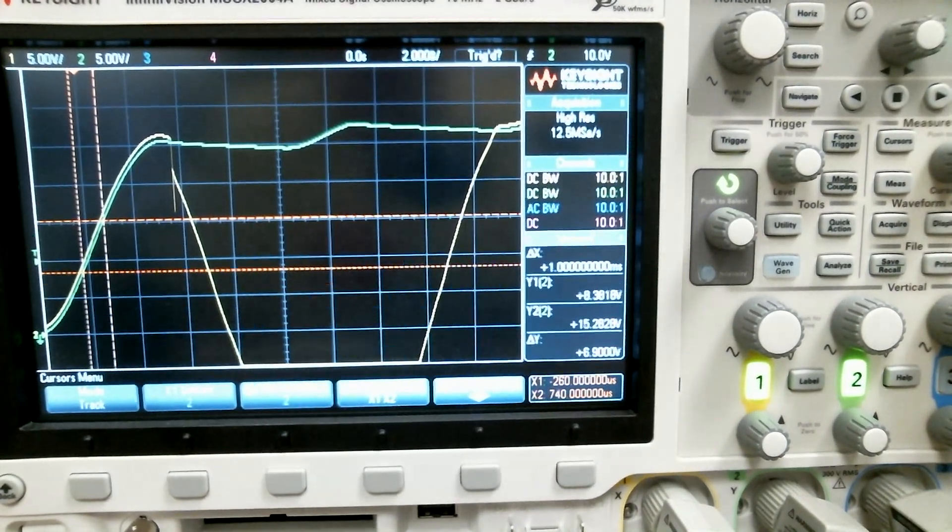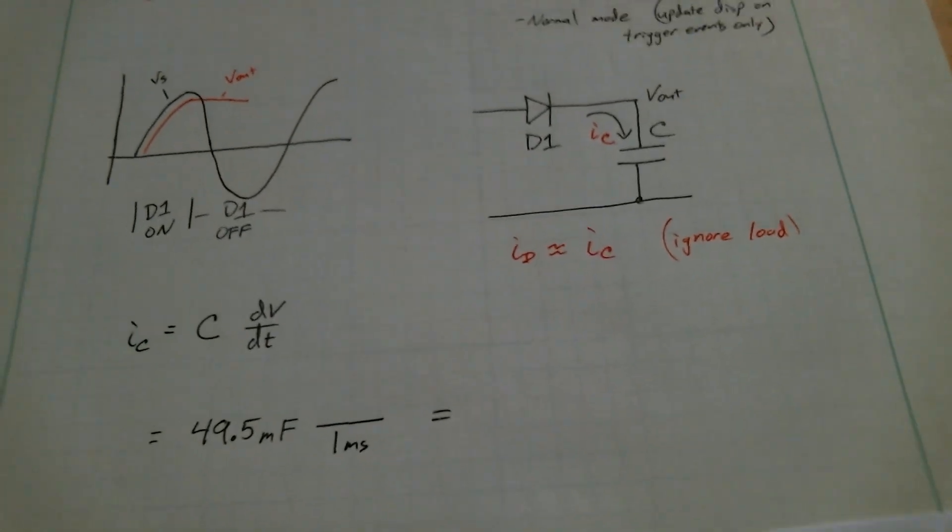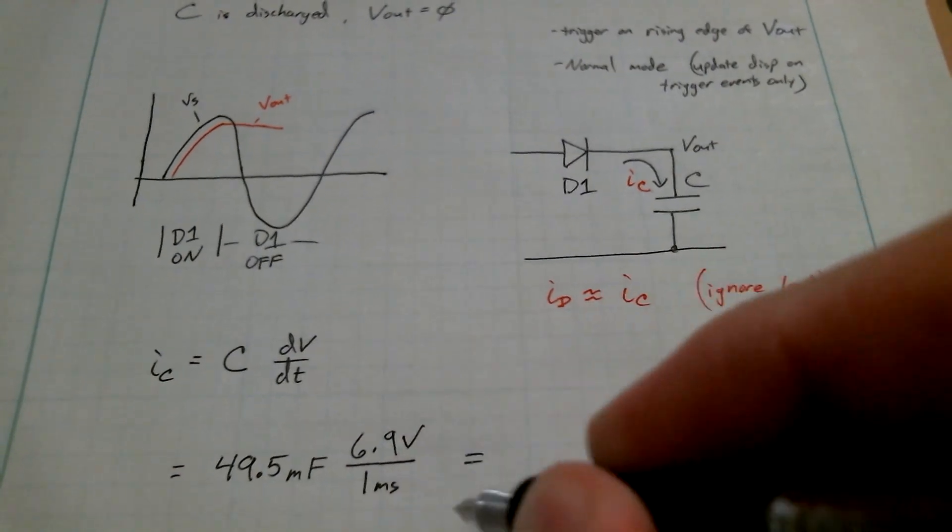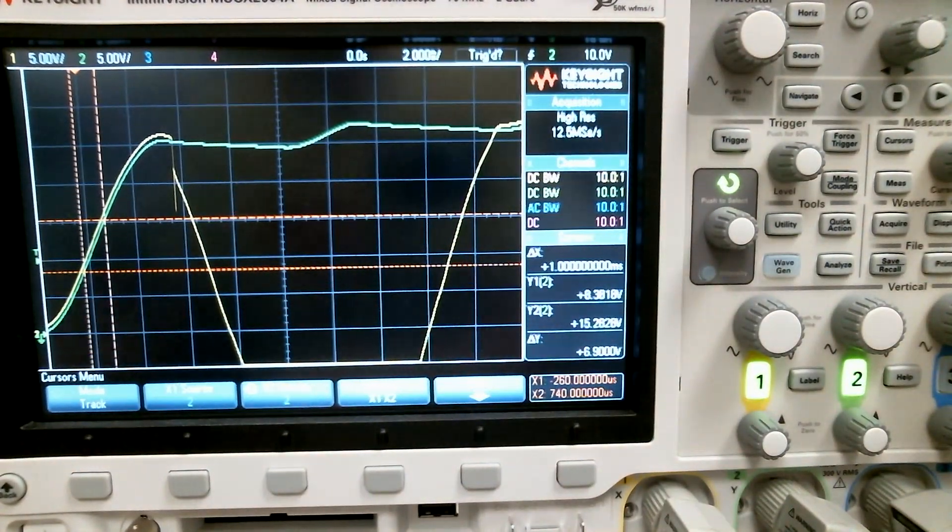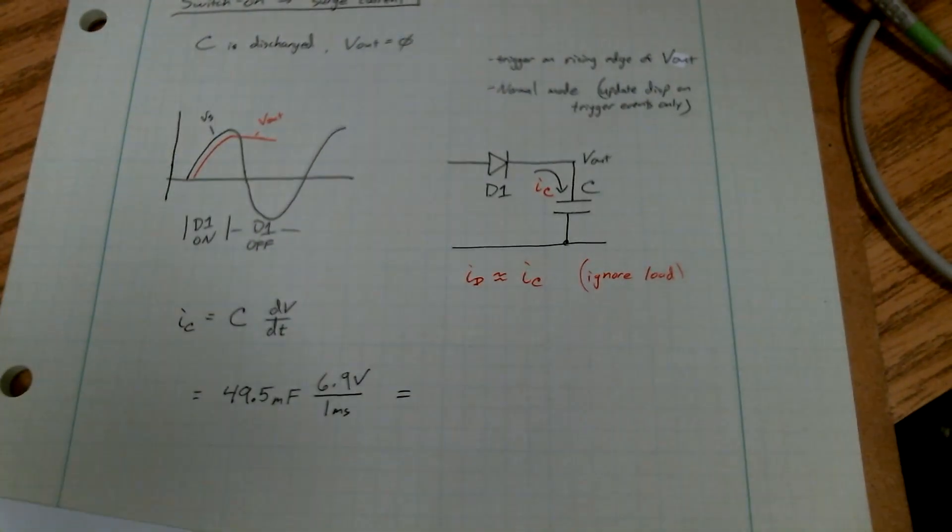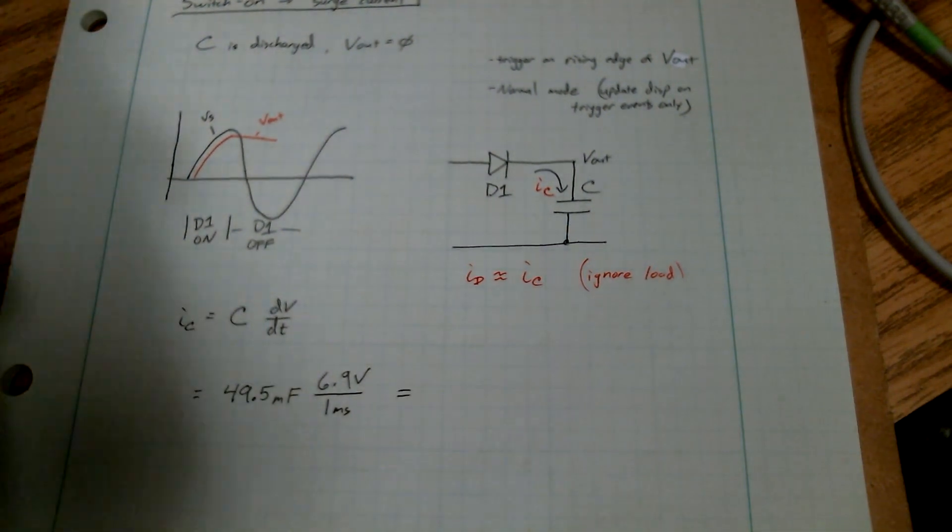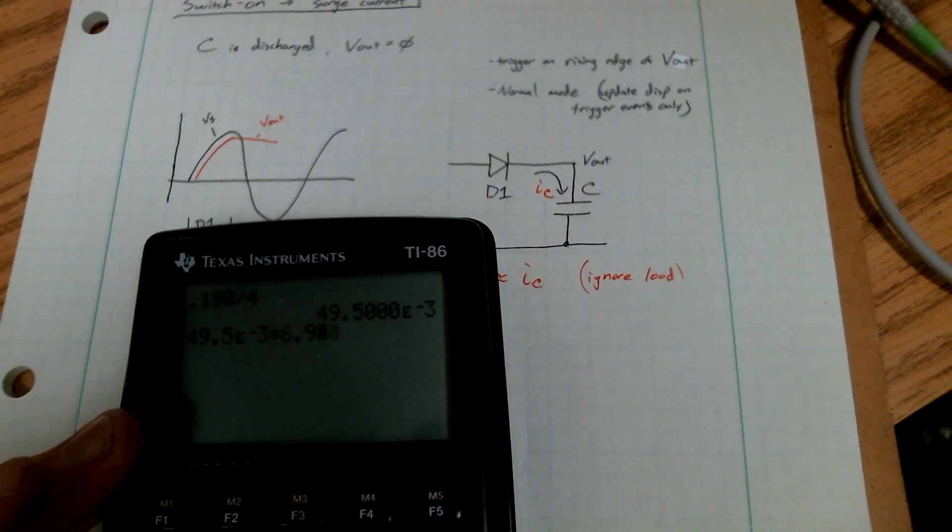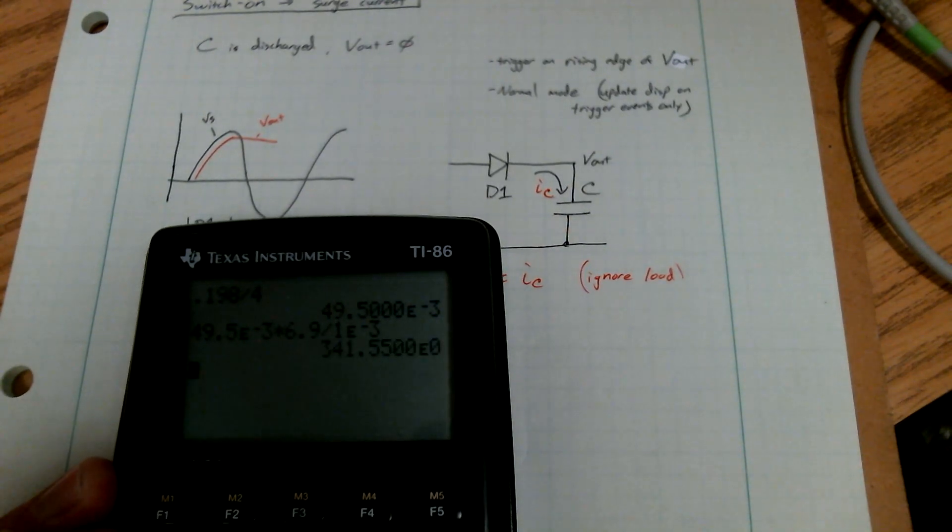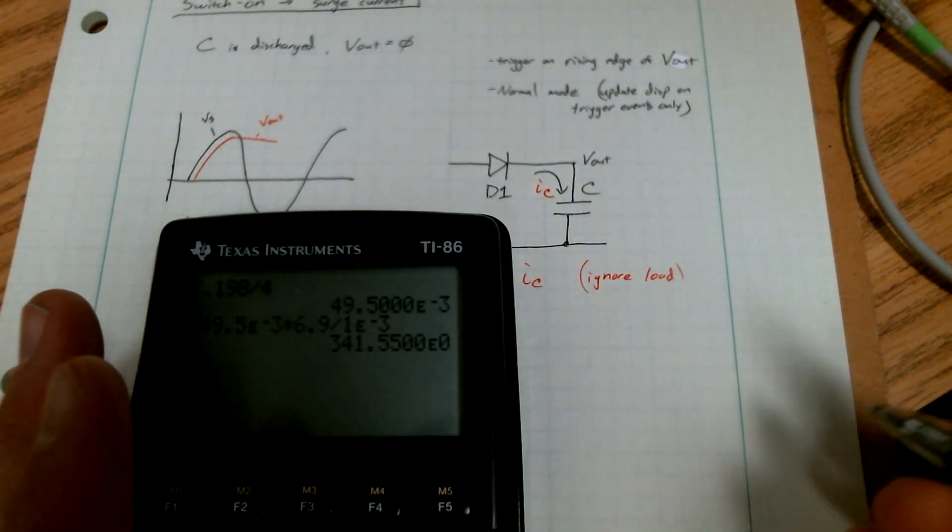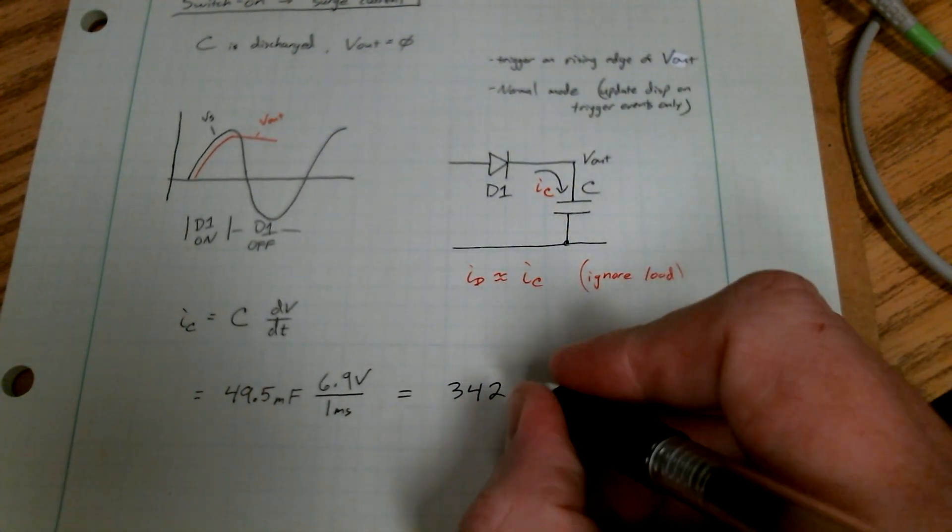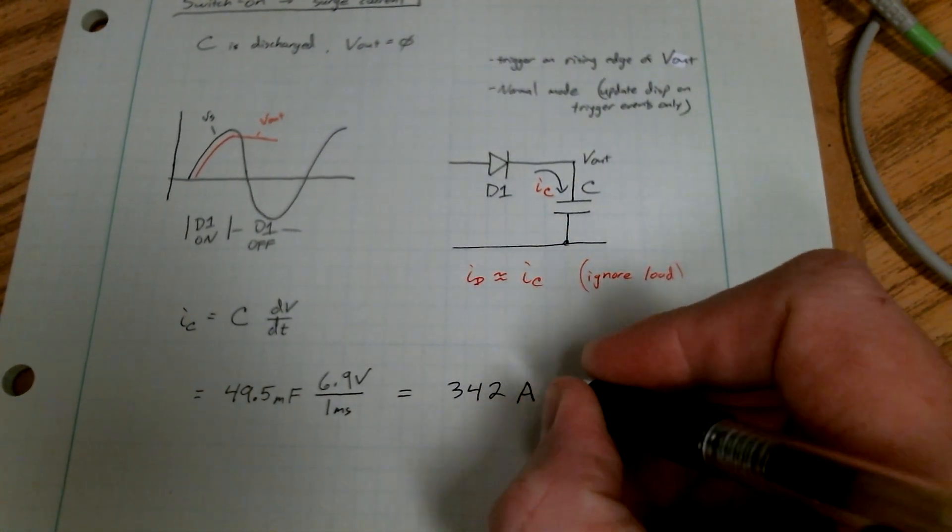All right. So we'll do some calculations. Let's see. 49.5 millifarads from the last one. 6.9 volts. Let me do a calculator here. 6.9 volts divided by one millisecond. Oh my goodness. 342. And because of my units, this is in amps.